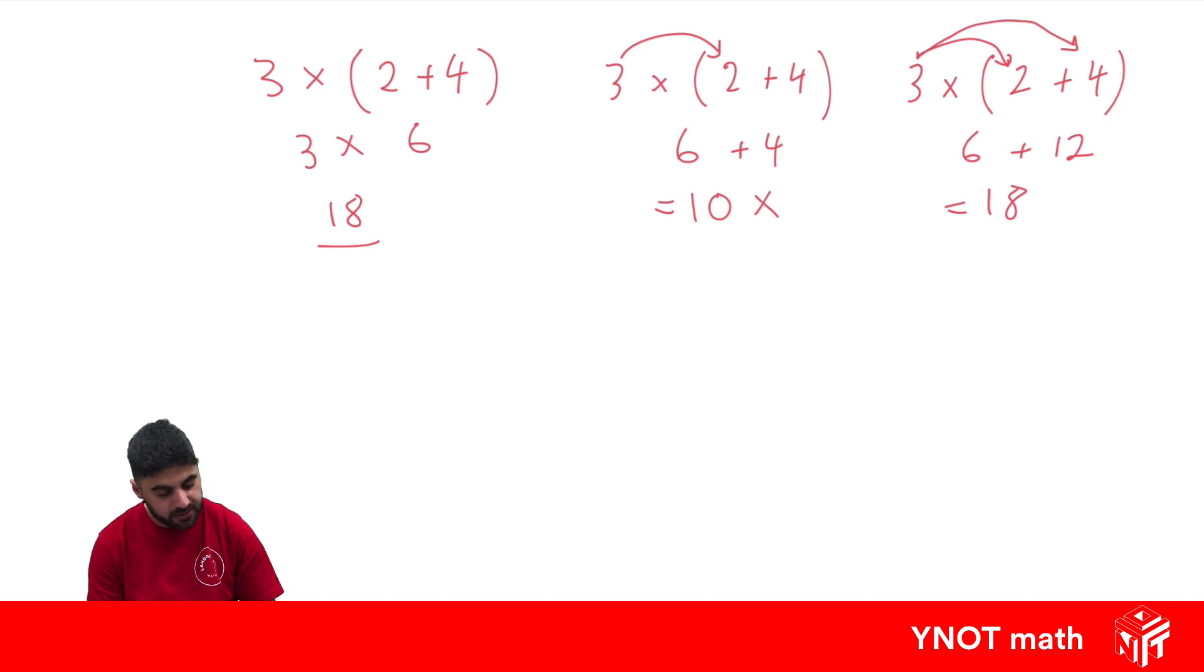We're going to use this in algebra. Let's have a look at 3 times x plus 4. The reason it's handy in algebra is because inside here, if we're doing order of operations, we'd have to do the brackets first. But these aren't like terms, so they can't be added, so there's not much else we can do.